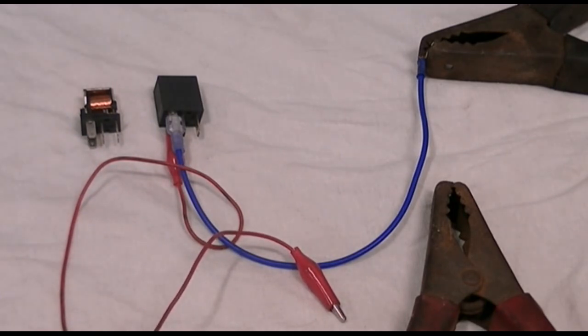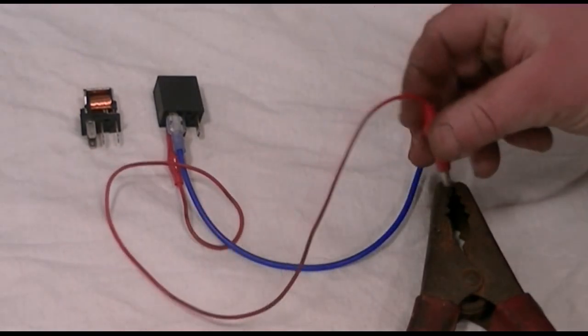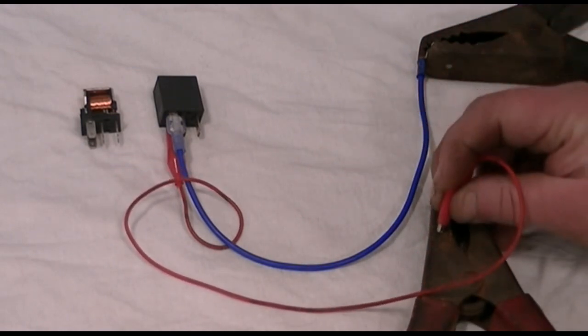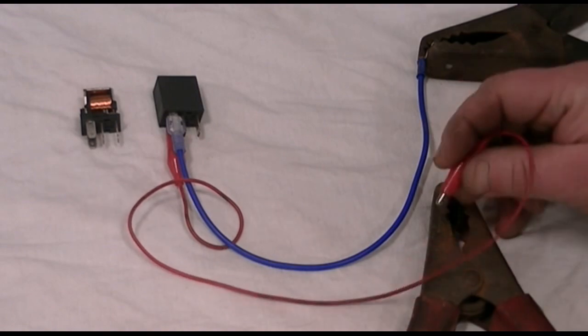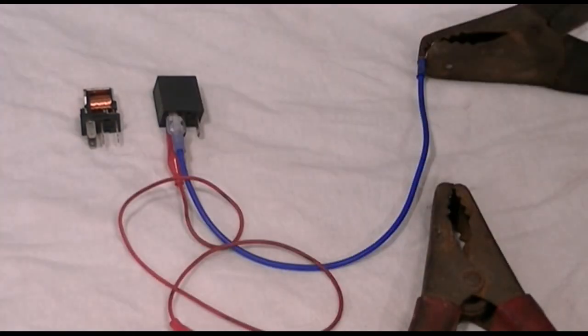We'll turn on a battery charger on low amp setting, and then we're going to take the positive lead and touch it to the battery charger lead. We should hear that relay click. That's the first indicator that our relay is working.